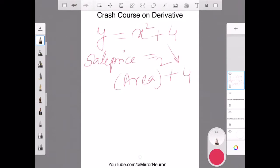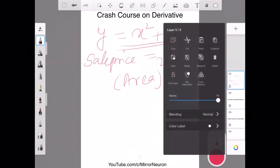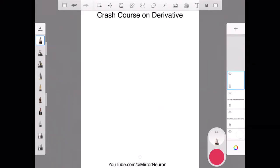And what I want to find is the minimum value of this function y is equal to x square plus 4. So, in order to do that, there are a couple of approaches that I can take. The first approach could be if I draw a graph.